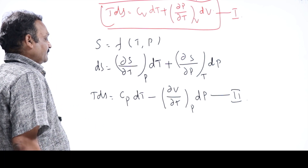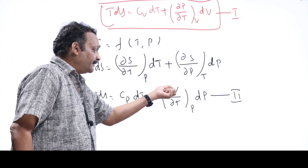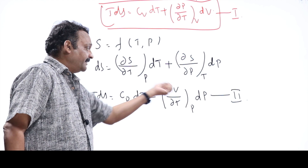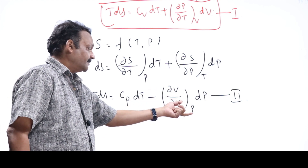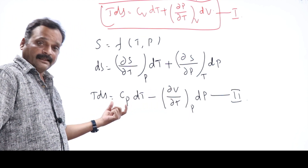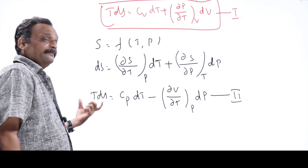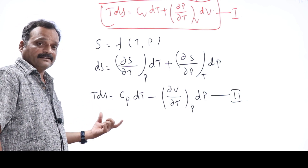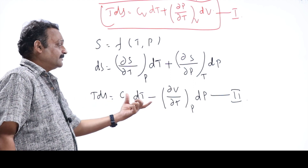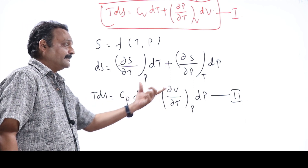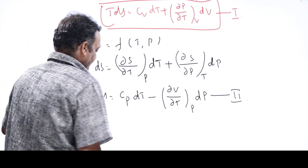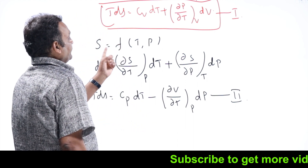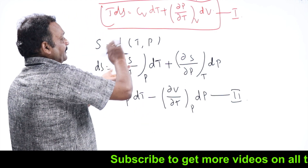So the second TDS equation is: TdS = Cp·dT − (∂V/∂T)ₚ dP. For the third TDS equation, we take entropy as a function of pressure and volume — temperature and volume are done, temperature and pressure are done, now pressure and volume will be taken.